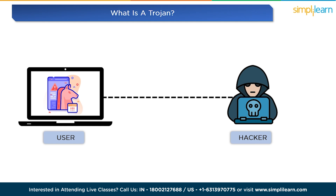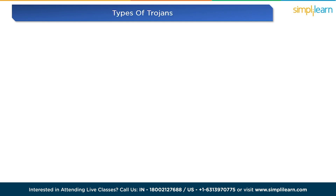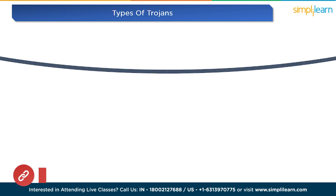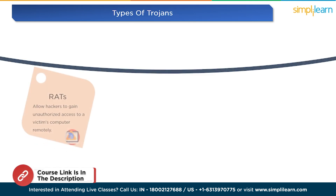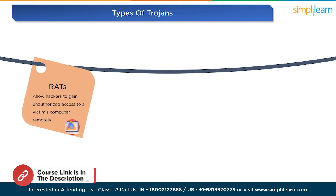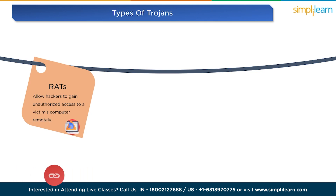Now let's look at the different types of Trojans out there. The first one is Remote Access Trojans, or RATs. These sneaky Trojans allow hackers to gain unauthorized access to a victim's computer remotely. They can spy on users, steal sensitive data, and even control the infected system.